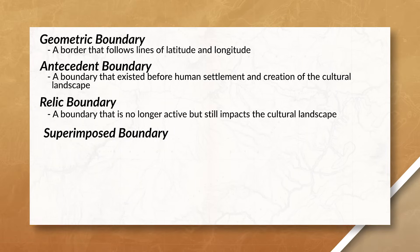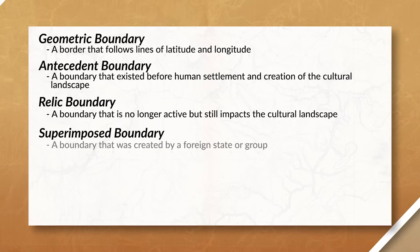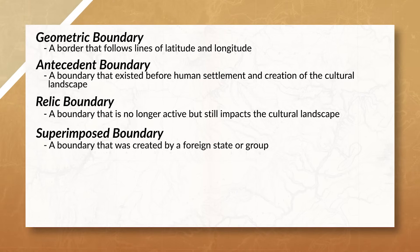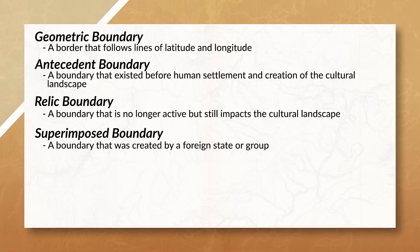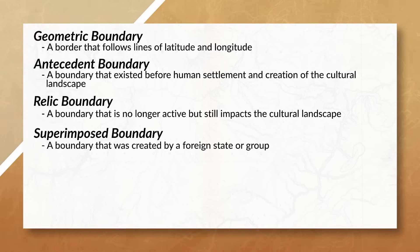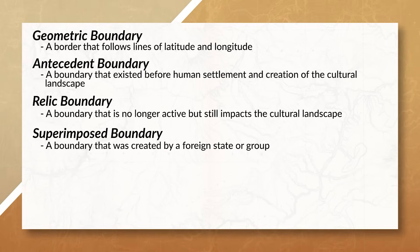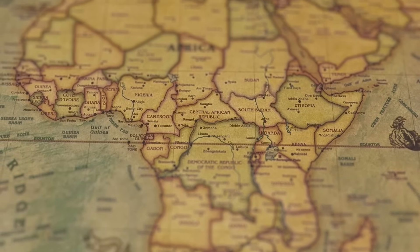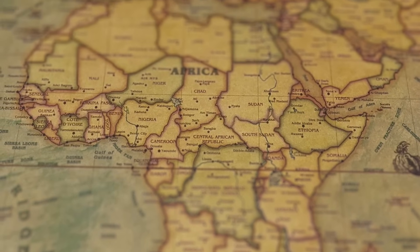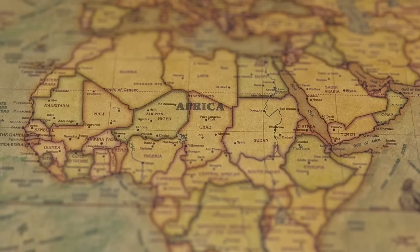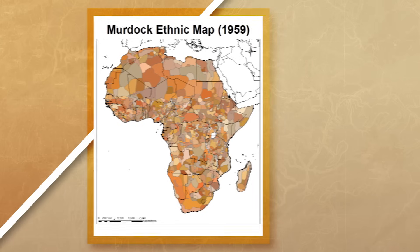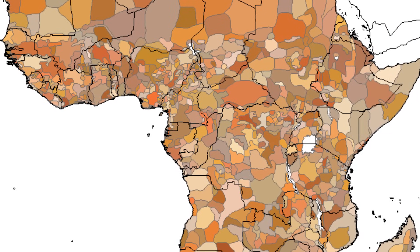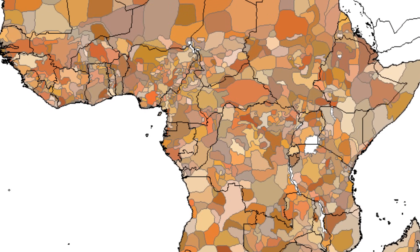The next type of boundary is a superimposed boundary. These are boundaries that were created by a foreign state or group. Local culture, ethnic groups, and linguistic characteristics of an area are often ignored in the creation of these boundaries, since they're created by an outside power. For example, the Berlin Conference created the boundaries for almost all of the countries in Africa without getting input from the different nations and people that lived there. That's one reason why the ethnic boundaries in Africa do not match the political boundaries.